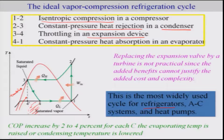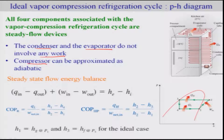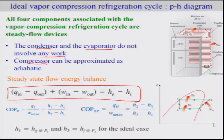We can start the analysis. There are 4 components in this vapor compression refrigeration cycle. We are going to consider them to be steady flow devices, and one can write a complete energy balance. The condenser and evaporator do not involve any work, and the compressor is considered adiabatic. A steady-state energy balance gives Q_in minus Q_out plus W_in minus W_out equals the change in enthalpy (H_exit minus H_inlet). One can apply this steady flow energy balance for each device.